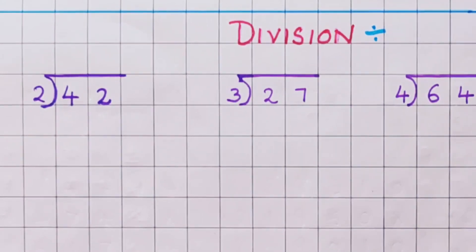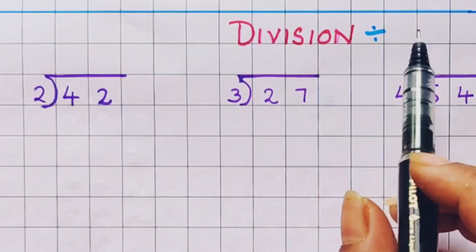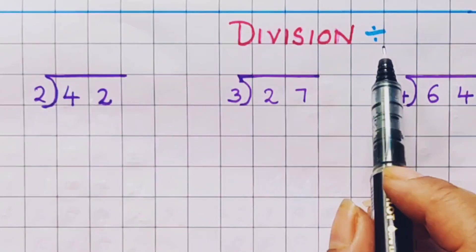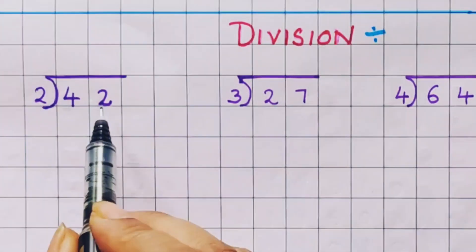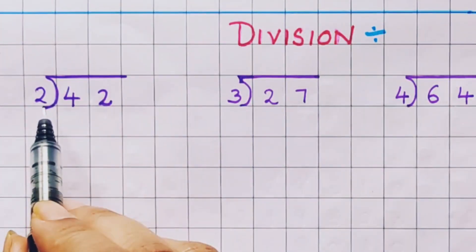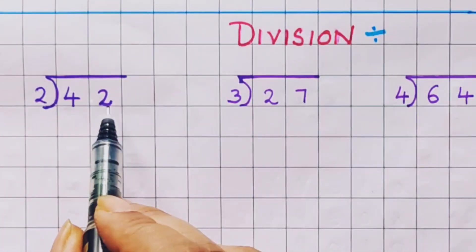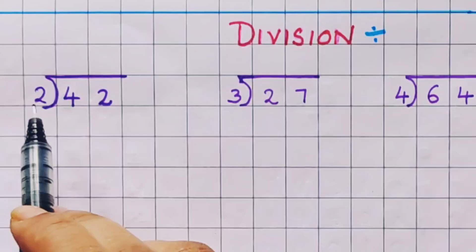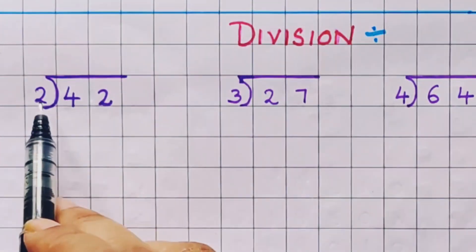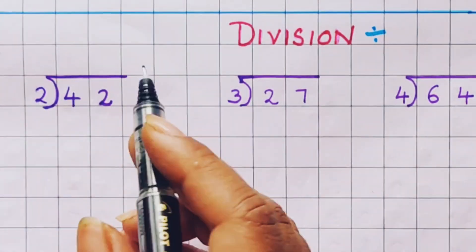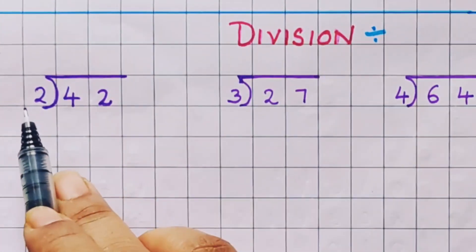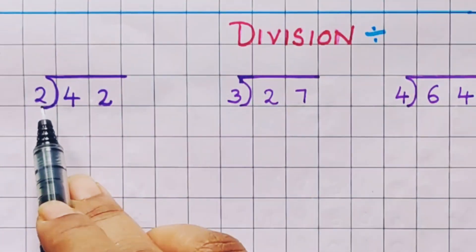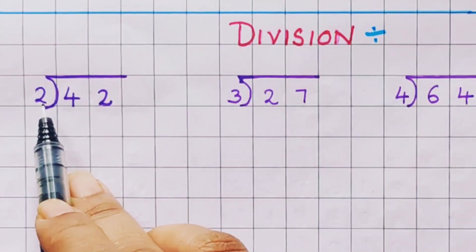Hi everyone, welcome back. Today we are going to learn division problems. This is the symbol of division. Let's begin with the first problem: 42 divided by 2. Here 42 is the dividend — the number we are going to divide — and 2 is the divisor — the number with which we are going to divide.